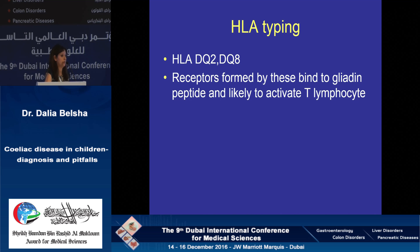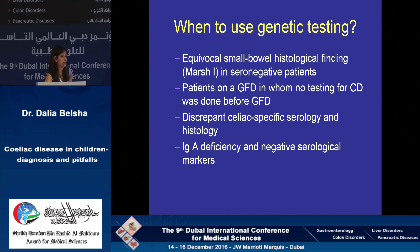HLA-DQ2 is present in 95% of celiac patients and HLA-DQ8 in 5%. If you have the gene, you will present the major histocompatibility type 2 complex, which activates your T cell lymphocytes. In practice, we use genetic testing in asymptomatic patients and sometimes in MARSH 1 patients when seronegative but there is clinical suspicion. It's also useful in patients already on a gluten-free diet who aren't keen to return to a normal diet, and in cases of discrepancy between serology and histology, or in IgA-deficient patients with negative serological markers.